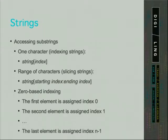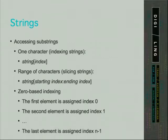A string is a sequence of characters, and in sequences the order of elements is important. For example, the string 'dog' and the string 'god' contain the same elements but not in the same order, making them different. Since order matters in sequences, we can do something called indexing — accessing or addressing one element of the sequence. In the case of strings, we can access individual characters, for example the letter 'g' in the string 'dog'.